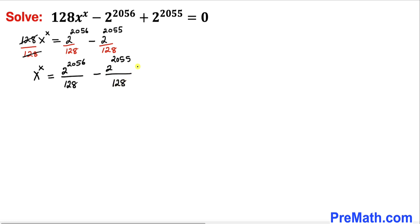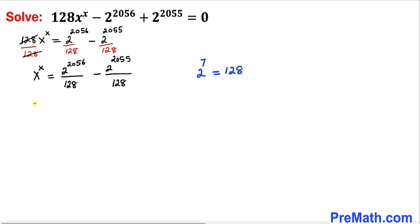Now let's focus on the denominator parts. We know that 128 equals 2 power 7, so I am going to replace those denominators with 2 power 7. Our equation becomes x power x equals 2 power 2056 divided by 2 power 7, minus 2 power 2055 divided by 2 power 7.